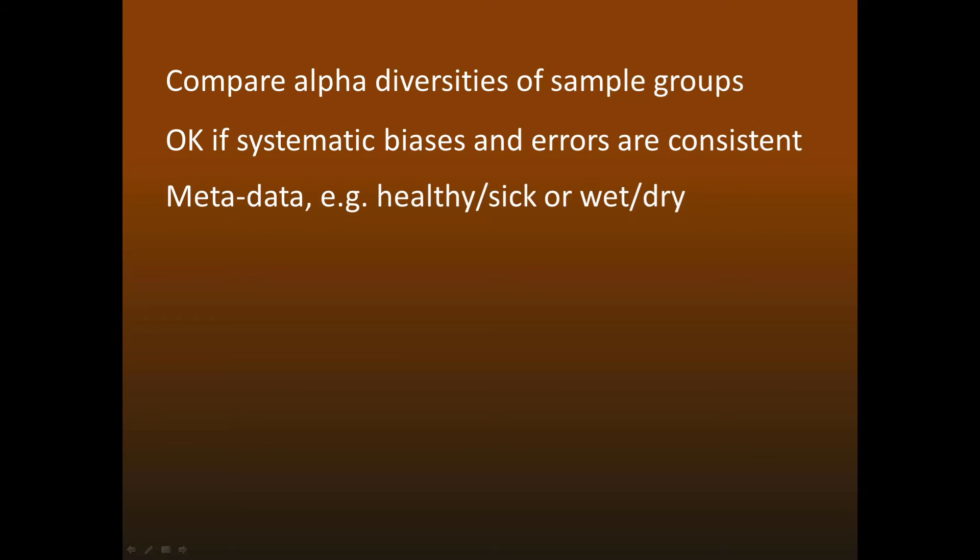While you can't measure the diversity of a single sample, it's often reasonable to compare the alpha diversities of sample groups. This is a valid procedure if the systematic errors and biases are consistent across different samples, which is typically the case if all samples were sequenced in the same run. Groups are defined by labeling samples with metadata such as healthy and sick or wet and dry. A rank sum test can be used to see if one group tends to have higher or lower diversity than another group. In uSearch, this is done with the alpha_div_sig command.